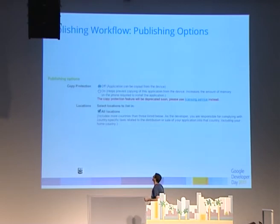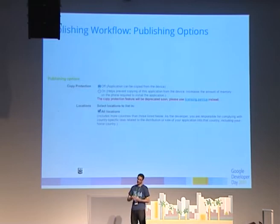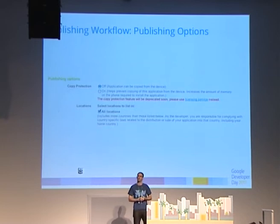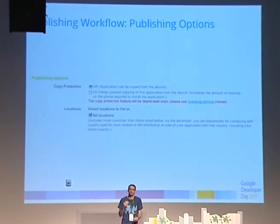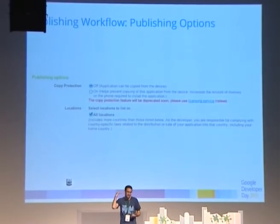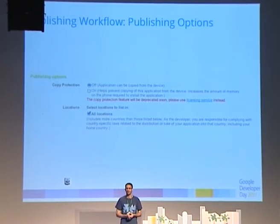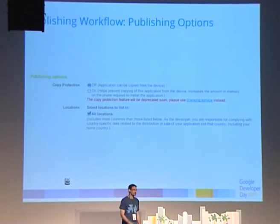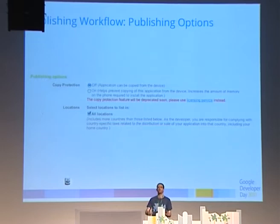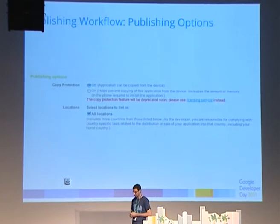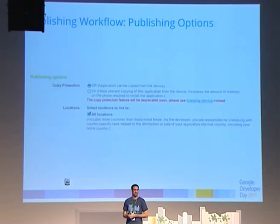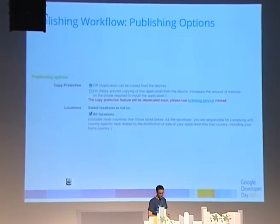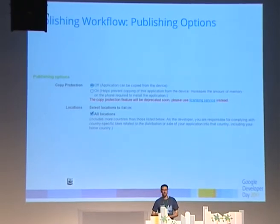Whilst you're publishing, you get this option — a strange option — which says this feature will soon be deprecated, please don't use it. It asks: would you like to copy protect your application? This particular copy protection is forward locking — DRM forward lock — which isn't very useful on Android since about the advent of rooted phones. It doesn't help so much, so we're deprecating it, because right now all it does is mean your application isn't distributed to all devices. Instead now we have the licensing service — the license verification library. Certainly, don't have this copy protect turned on; we'll run through the license service in a minute.